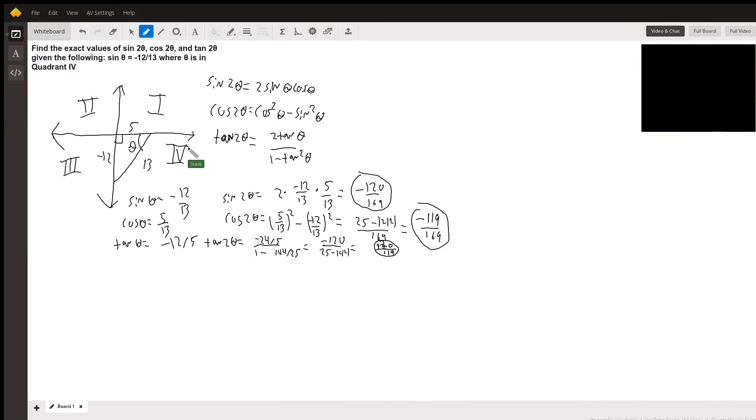To solve this problem, we need a few pieces of information. First are the double angle formulas: sin(2θ) = 2sin(θ)cos(θ), cos(2θ) = cos²(θ) - sin²(θ), and tan(2θ) = 2tan(θ)/(1 - tan²(θ)). Second, we can use the 5-12-13 special right triangle.